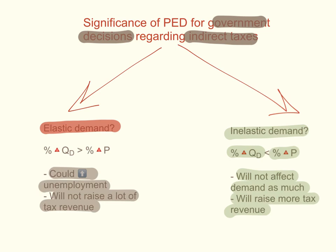Products like cigarettes are a perfect example. Cigarettes have rather inelastic demand, so consumers will continue to buy them. The firms that produce cigarettes can pass on these taxes to consumers in the form of higher prices, and it will generate enough government tax revenue.